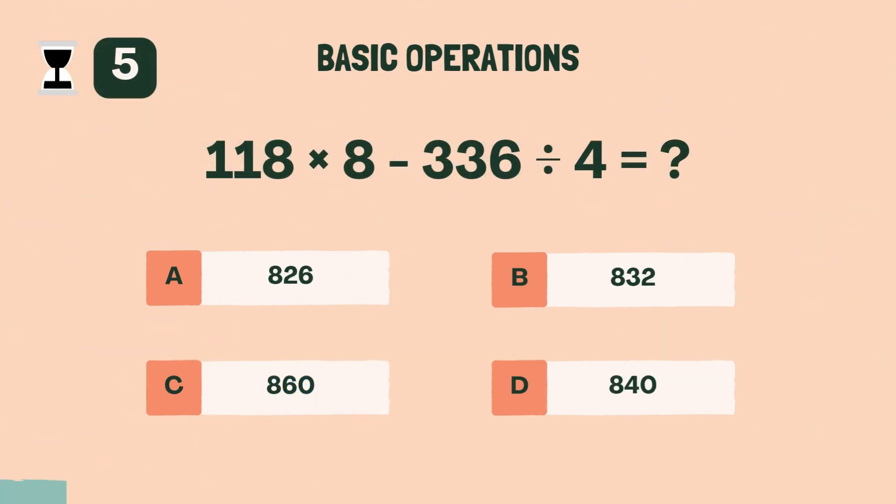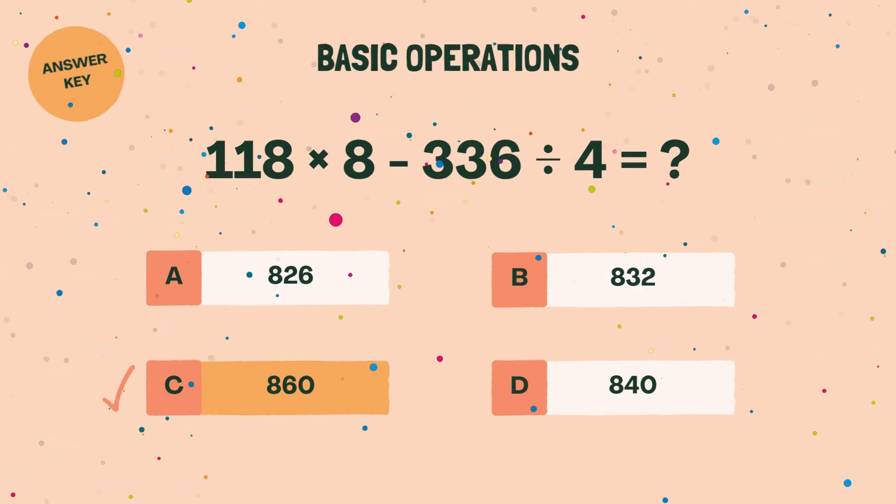What is 118 times 8 minus 336 divided by 4? C, 860.